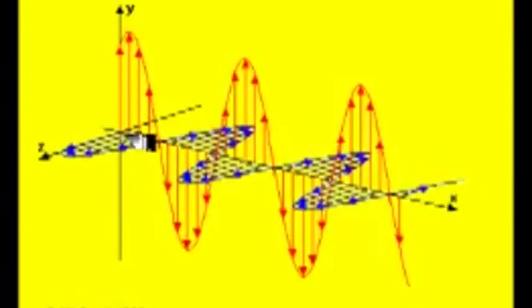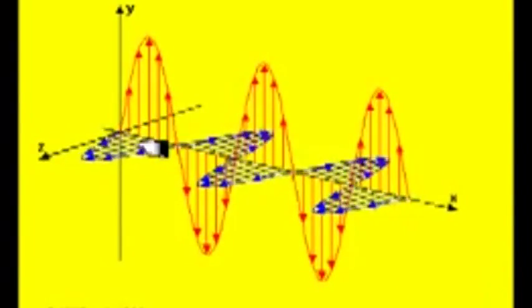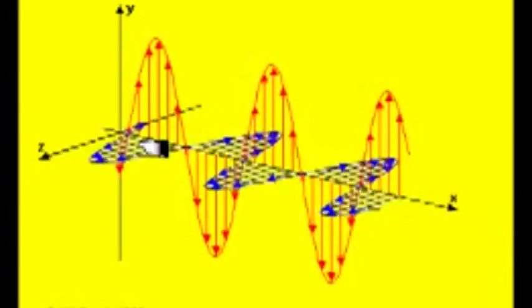As the electric field gets bigger, the magnetic field gets bigger. As the electric field reads zero, the magnetic field reads zero. The geometry is two fields perpendicular to each other and at the same time both are perpendicular to the direction of the wave.